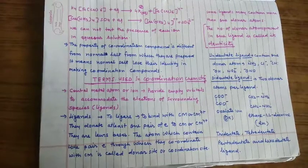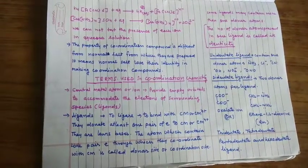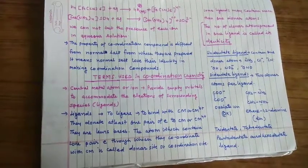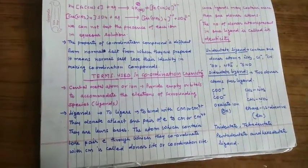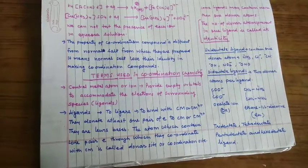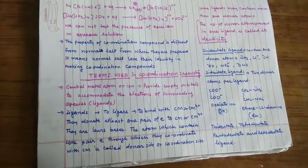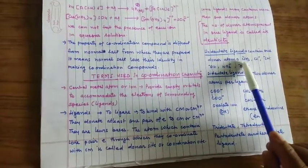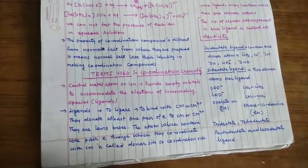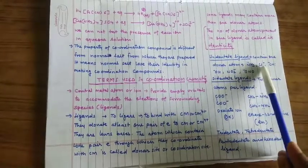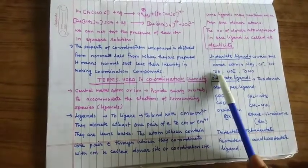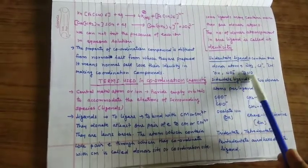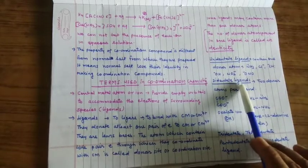Number of donor atoms present in one ligand is called its denticity. Denticity मतलब दांत। दांत का ये है मतलब कि donor atoms कितने हैं एक ligand में, वो उसकी denticity होती है। For example unidentate ligand, uni means one. अगर ligand में एक ही donor atom है जिसपर lone pair electron है, तो उनको unidentate ligand बोलते हैं। Ammonia, chloride, cyanide, hydroxide, nitride, NO2 or ONO.